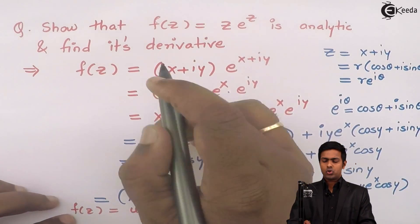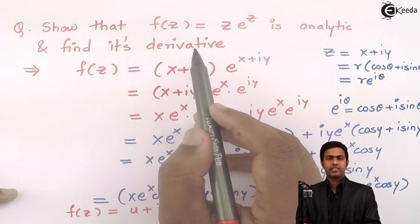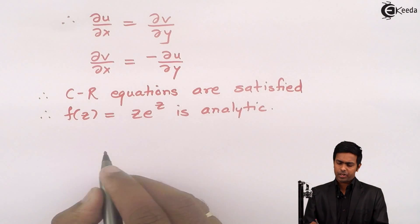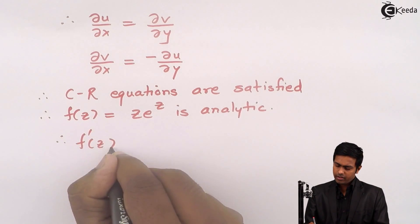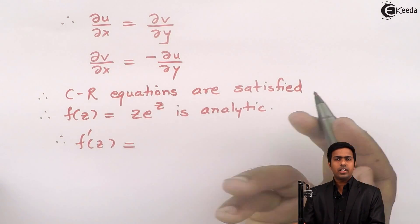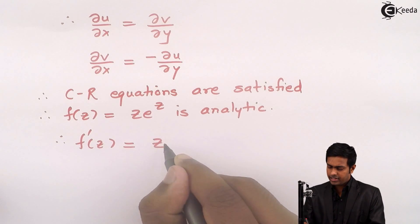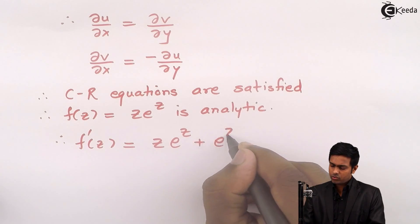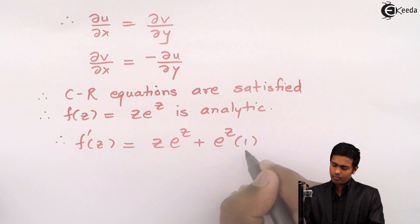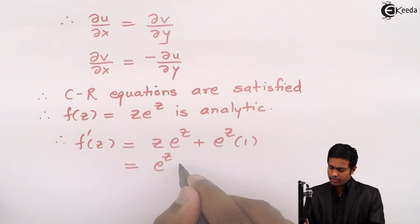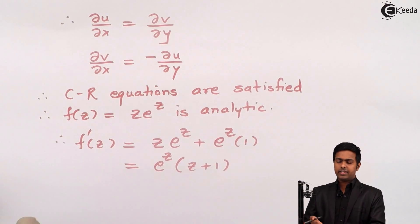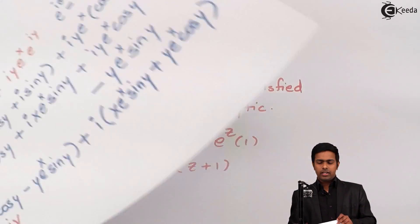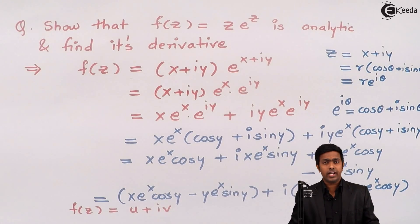Now we find the derivative. Differentiating f(z) = ze^z with respect to z using the product rule: f'(z) = z·e^z + e^z·1 = e^z(z + 1). This is the derivative of the analytic function f(z) = ze^z.